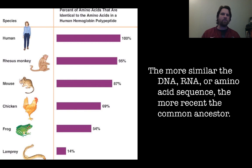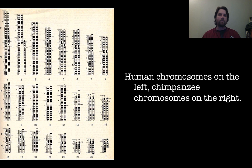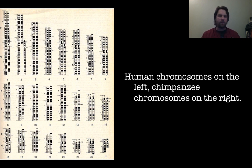Looking at the percent of amino acids identical to the human hemoglobin polypeptide: humans are 100%, the rhesus monkey shares about 95%, and a lamprey shares only about 14%. The higher that percentage, the closer the common ancestor of the two. Also, human and chimpanzee chromosomes both have 23 pairs and show very similar banding patterns where genes are located — similar enough to suggest a common ancestor.